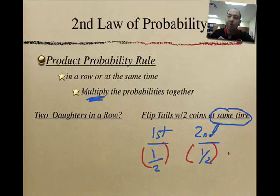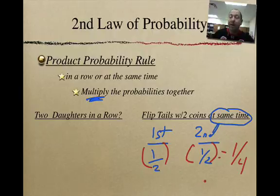So if I multiply these two again, we get a similar answer to the first problem, which is one-fourth. And, again, that just means that this is less likely to happen than just flipping tails all by itself.